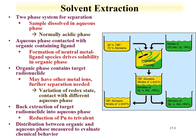In order for a metal ion to be extracted from the aqueous phase to the organic phase, a neutral species needs to be formed. As on the previous page, we had two nitrates with the uranyl, forming a neutral species that drives solubility in the organic phase. The organic phase contains the target radionuclides and may have other metal ions present that need further separation. In a process, you may have a washing phase. You can also change the redox state or acid concentration to back-extract a metal ion from the organic phase to an aqueous phase.